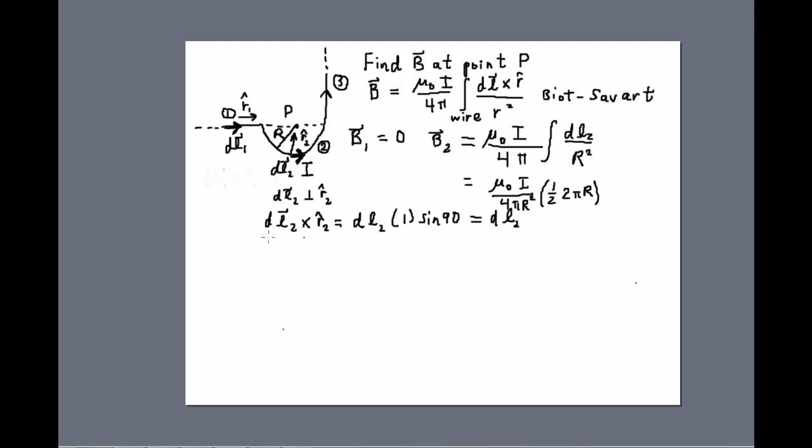So I should have done that back here where I wrote down dL2 cross R2 hat. Using the right hand rule, you can see that dL2 cross R2 hat is out of the page. So I should write down here out of the page. And that's what the answer is to B2.